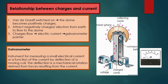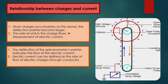The relationship between charges and current can be studied using a device called a Wandegraph. When switched on, the dome becomes positively charged and attracts negatively charged particles from the earth to flow to the dome. When a galvanometer is connected and it deflects, this indicates that current exists. A galvanometer is an instrument for measuring small electrical current by deflection of a moving coil. The more charges accumulate on the dome, the greater the deflection of the pointer.